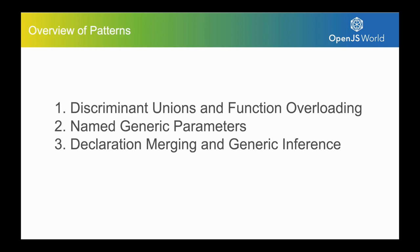Today we're going to be covering five patterns, but we're going to be doing so in three parts. The first part is going to be covering discriminant unions and function overloading. The second part is going to cover named generic parameters. And the third part is going to cover declaration merging and generic inference.